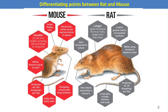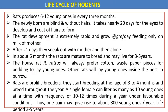The tail of a mouse is long, thin, and hairy, while the rat tail is long but visually hairless and scaly. These are some of the differential points between rats and mice.